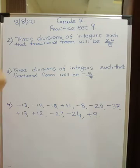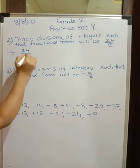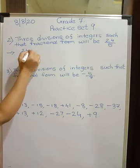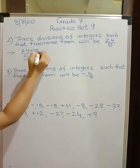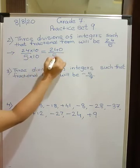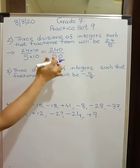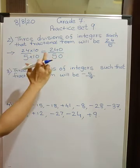Now how to do is very easy. What you do is 24 upon 5, multiply it by 10, numerator also and denominator also. What you get? You get 240 upon 50. This is the fractional form which will give you answer 24 upon 5 after dividing this by 10. So 240 upon 50 is first.